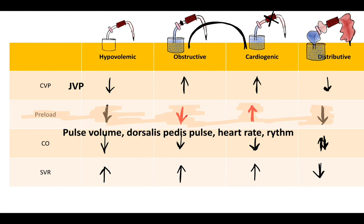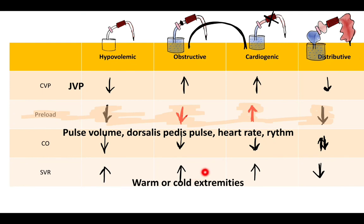If SVR cannot be calculated, simply look at the extremities: warm extremities indicate low SVR (vasodilation), suggesting distributive shock; cold extremities indicate vasoconstriction and high SVR.